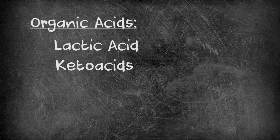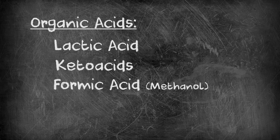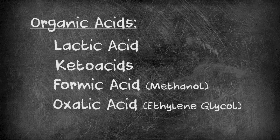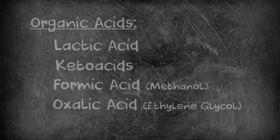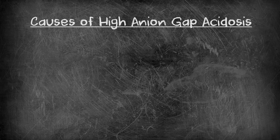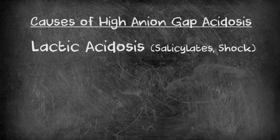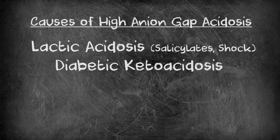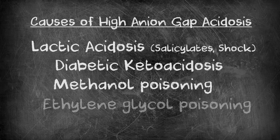Organic acids causing a high anion gap acidosis include lactic acid, keto acids such as acetoacetic acid and beta-hydroxybutyrate, formic acid which is a metabolite of methanol, and oxalic acid which is a metabolite of ethylene glycol. So causes of a high anion gap acidosis include lactic acidosis (including salicylate toxicity and shock amongst others), diabetic ketoacidosis, methanol poisoning, and ethylene glycol poisoning. Bottom line: high anion gap acidosis — think more organic acid being produced or ingested.